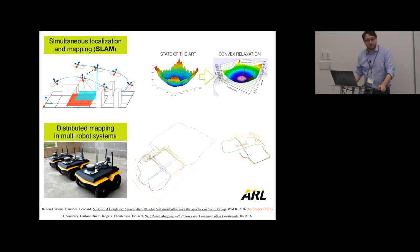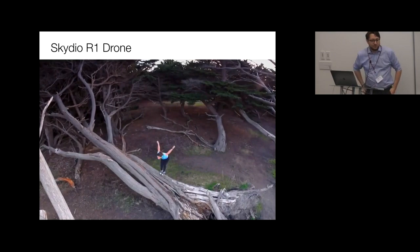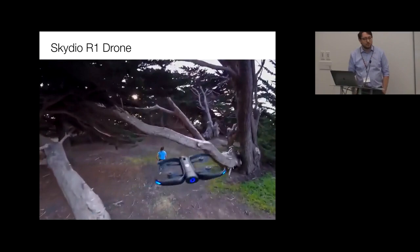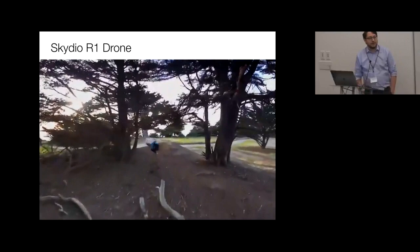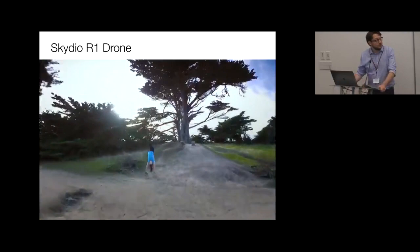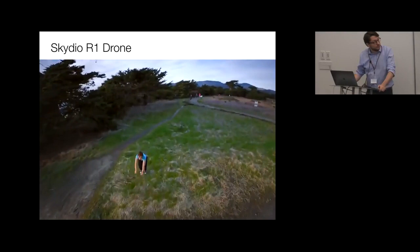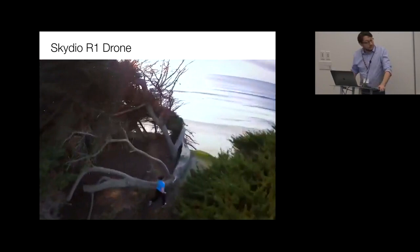What's exciting about spatial perception is that research is getting more mature and transitioning to real products quickly. For example, this drone — called the Sky View R1 — uses for perception and localization a library called GT-SAM, developed by Frank Dellaert at Georgia Tech, which I've contributed to. You can see the drone following a person here, and everything is fully autonomous without manual control.